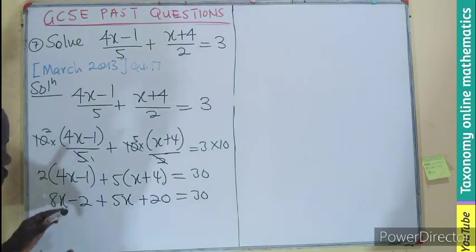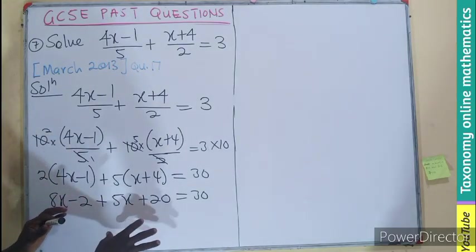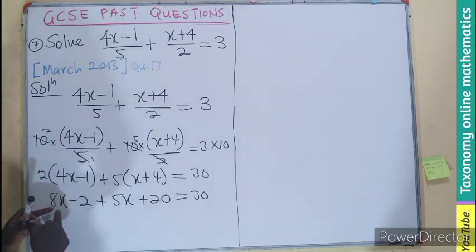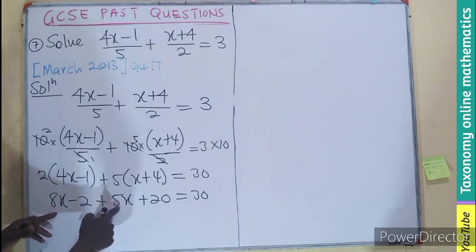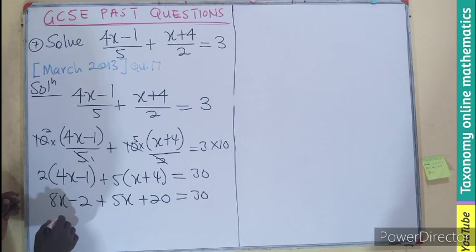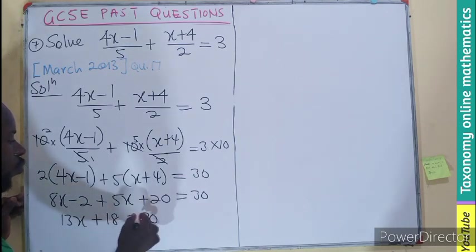The next thing is to group like terms. We can simplify first before we group. I see 8x and 5x, so I can add them together to get 13x. 20 minus 2 gives us 18 equals 30.